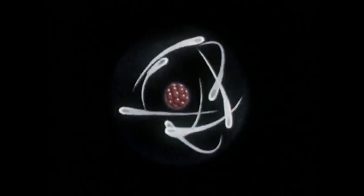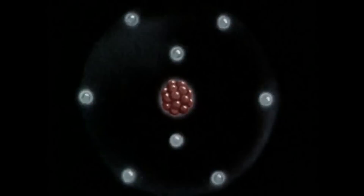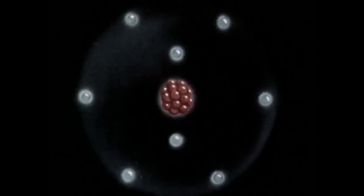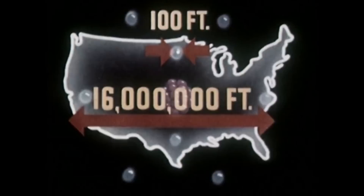No one has ever seen inside an atom. However, we think of it as a system of electrons circulating around a heavy nucleus at almost inconceivable speeds. In order to explain the principles concerned in this story, let's assume we can stop the action within the atom. This is a symbol representing the atom — not an attempt to show it as it actually is. It is impossible to show the correct relative proportions on this screen. If an atom could be as large as the United States, one of its electrons would be only about 100 feet across. Therefore, to tell our story, we must resort to a symbol.